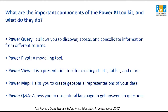What are the important components of the Power BI toolkit and what do they do? Number one is Power Query — it helps us discover, access, and consolidate information from different sources. Power Pivot is a data modeling tool where data modeling is done. Power View is a presentation tool for creating charts, tables, and more. Power Map helps create geospatial representations of your data. And Power Q&A allows natural language or AI to get answers to your questions.